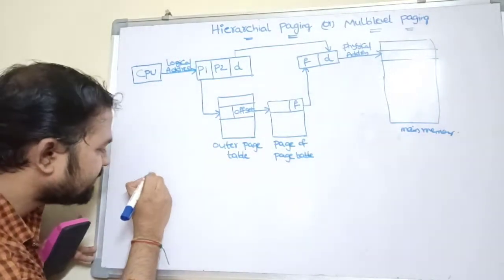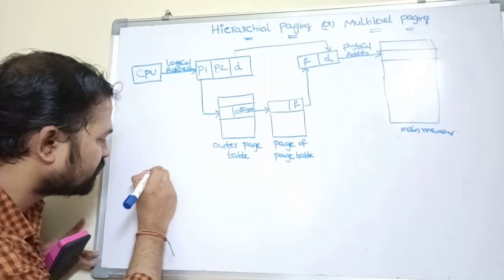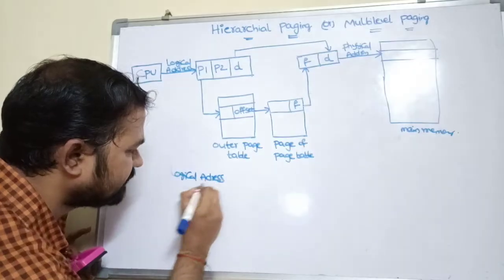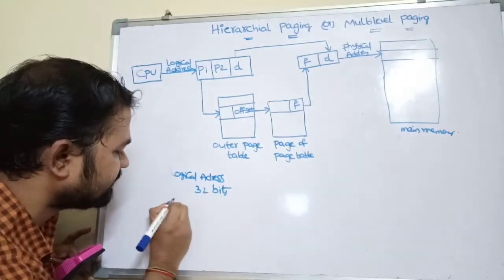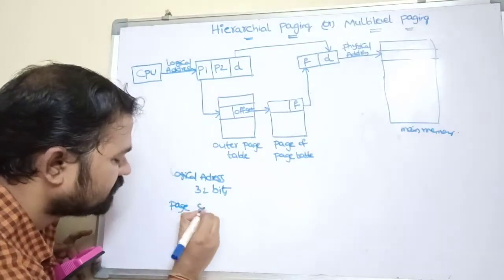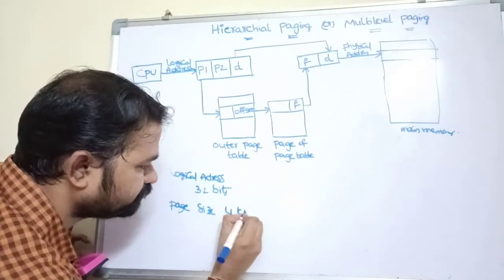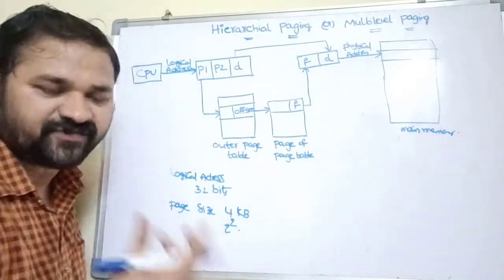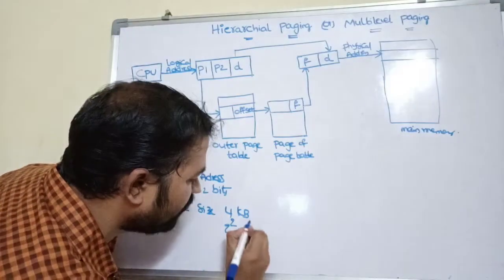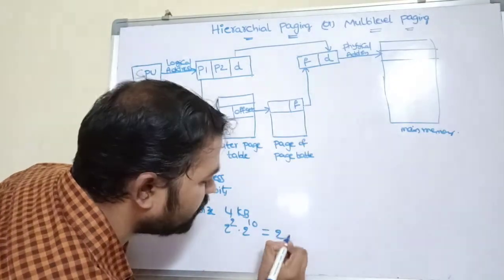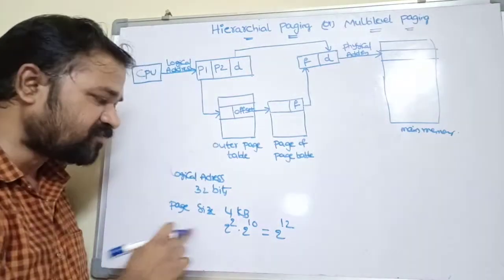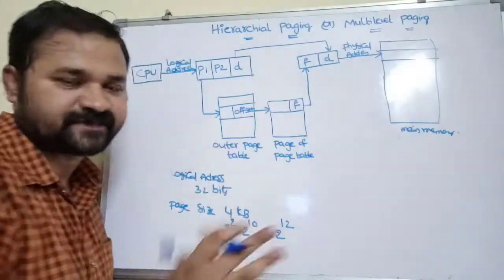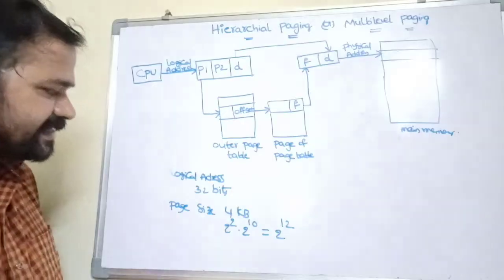Let's take an example. Assume the size of a logical address is 32 bits, and the size of a page is 4 kilobytes. 4 KB can be written as 2^2 × 2^10 = 2^12 bytes, meaning a page contains 2^12 locations.